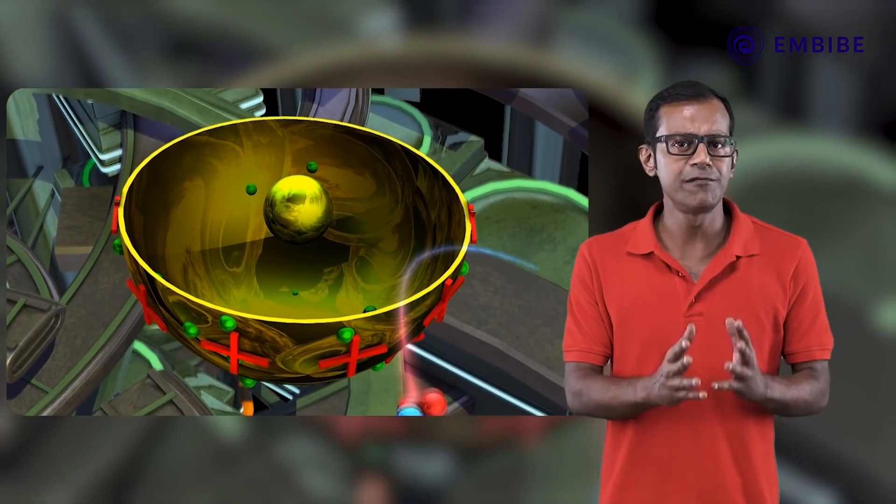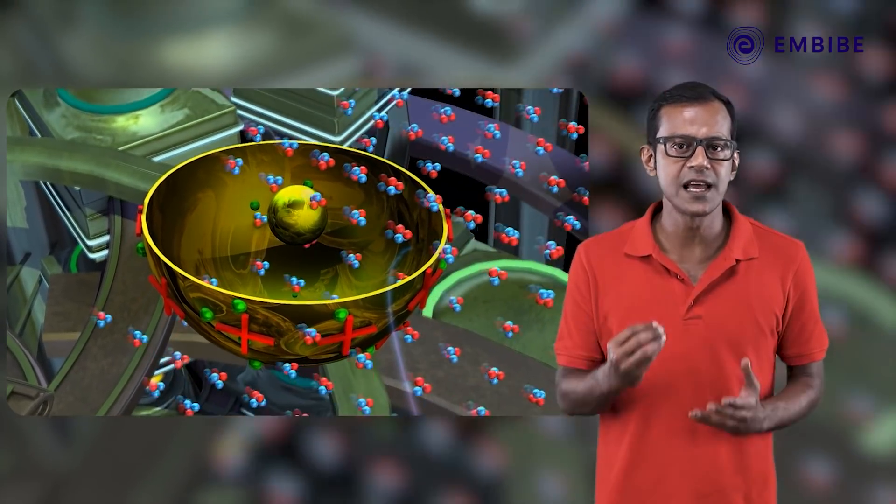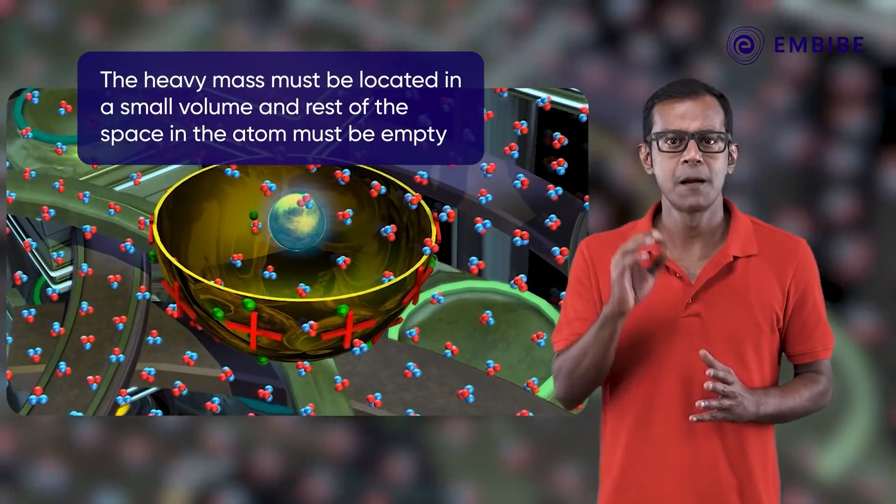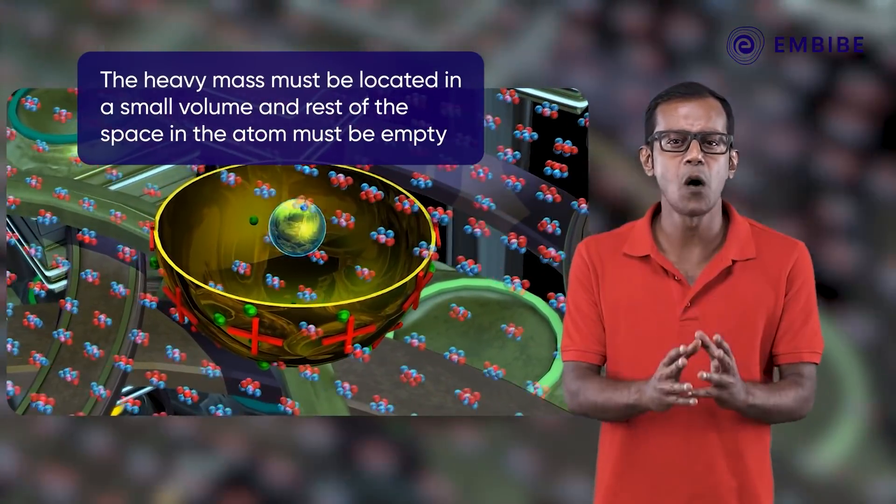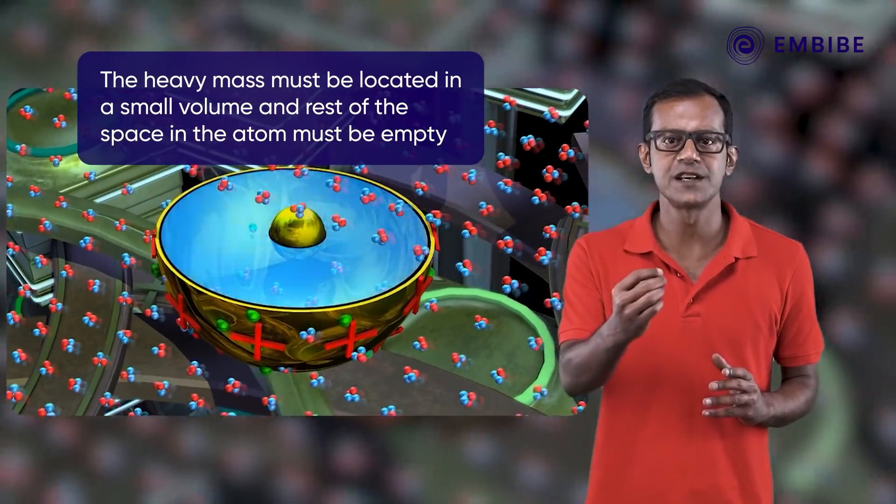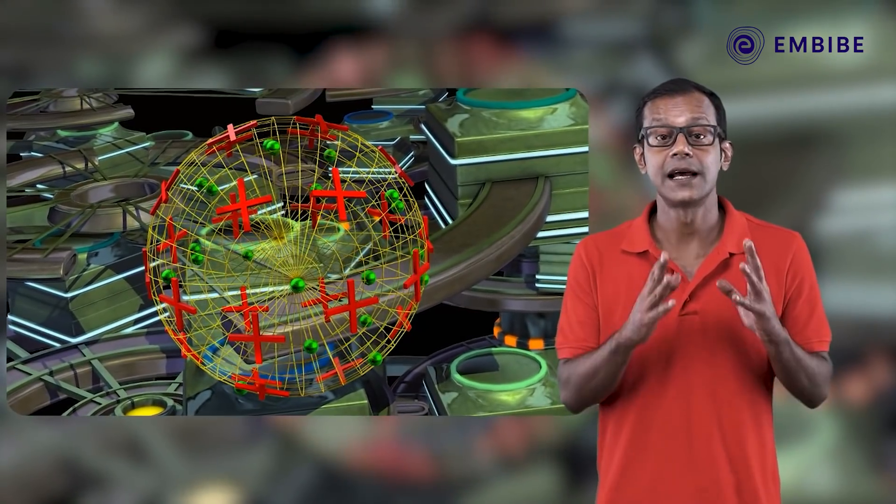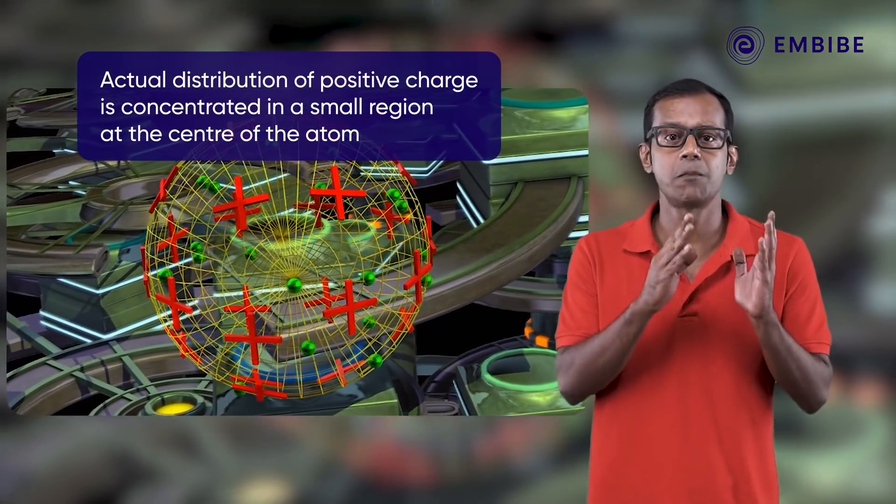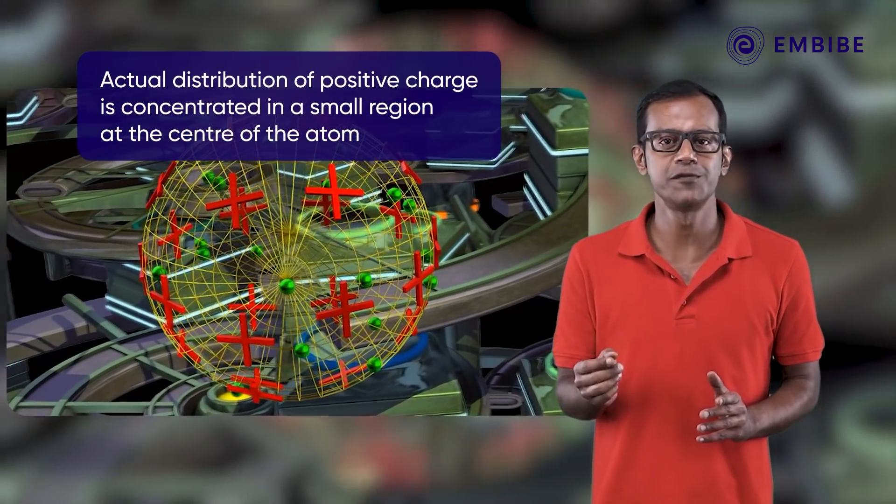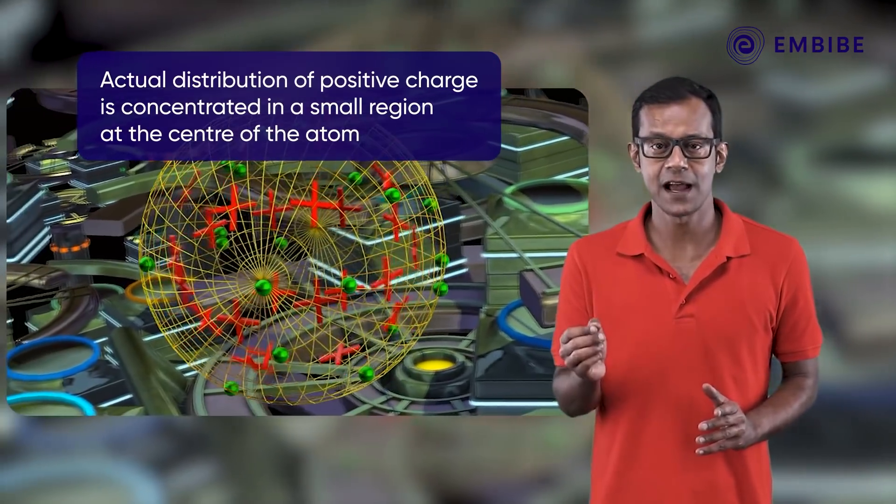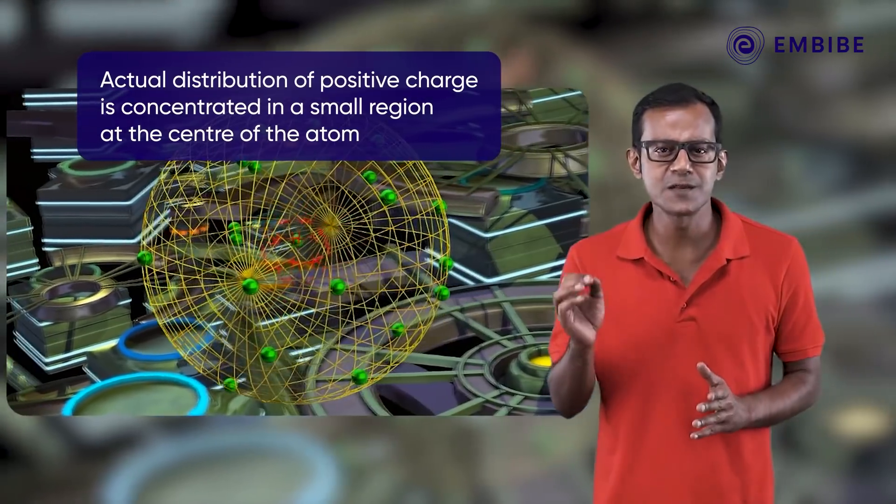As thousands of alpha particles passed through the thin foil undeviated, this heavy mass must be located in a small volume, and the rest of the space in the atom must be empty. This suggested that the actual distribution of positive charge is not uniform over the spherical atom, but is in fact concentrated in a small region at the center.